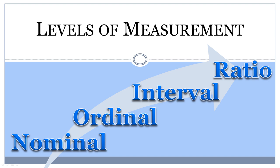That is why it is best to use the highest level of measurement possible when collecting information. In this video, nominal, ordinal, interval, and ratio levels will be described in order from the lowest to the highest level of measurement. By the end of this video, you should be able to identify the level of measurement being used in a study.